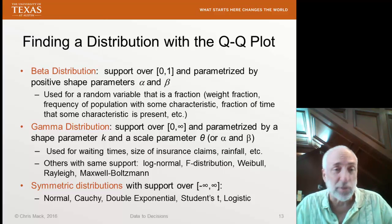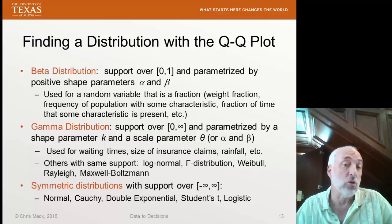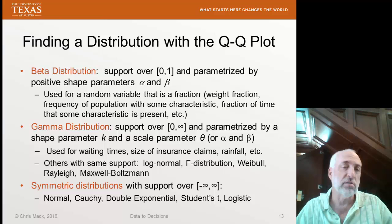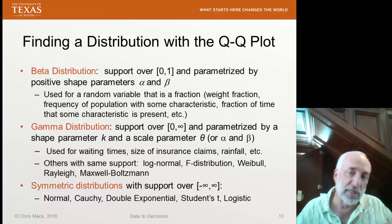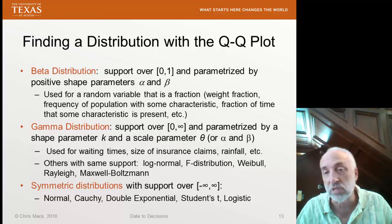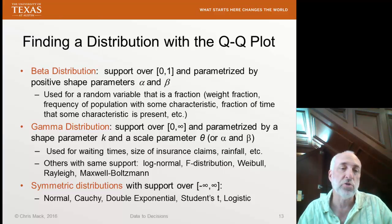Sometimes we see that our distribution is symmetric, but it has either heavier or lighter tails than our normal distribution. So if we have a symmetric distribution with support from minus infinity to infinity, we might look at the Cauchy, double exponential, the Student's t distribution, the logistic distribution, and of course, our old favorite, the normal distribution.